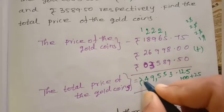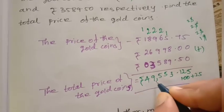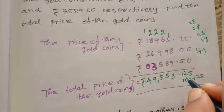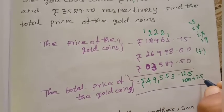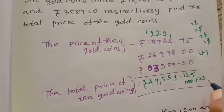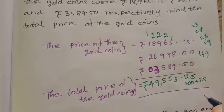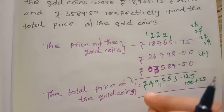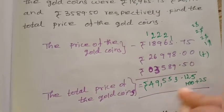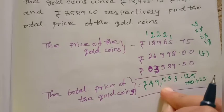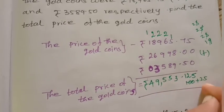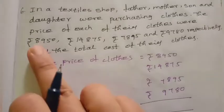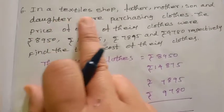Total price: 49,553 rupees 25 paisa. Ok, 3 gold coins total amount rupees 49,553. Next is question 6.